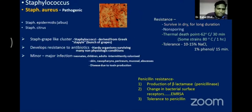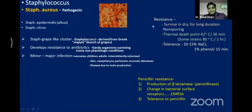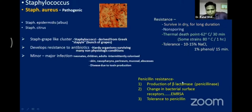Staphylococcus aureus has developed resistance to antibiotics and can cause minor to major infections. It is non-sporing but has the capacity to survive dryness for long periods. It can tolerate thermal conditions — surviving at 62°C for 30 minutes — and can also tolerate high percentages of NaCl.